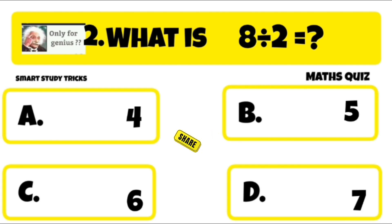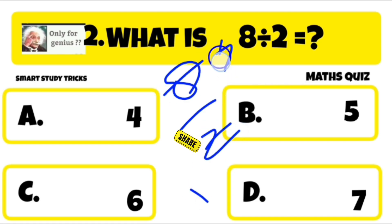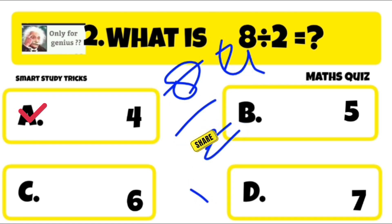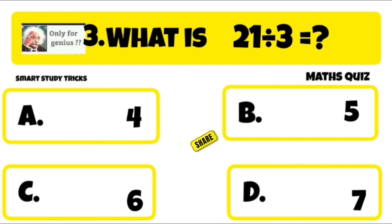Next quiz is quiz number 2: what is 8 divided by 2? 8 divided by 2 is equal to 4. Right answer is A: 4.